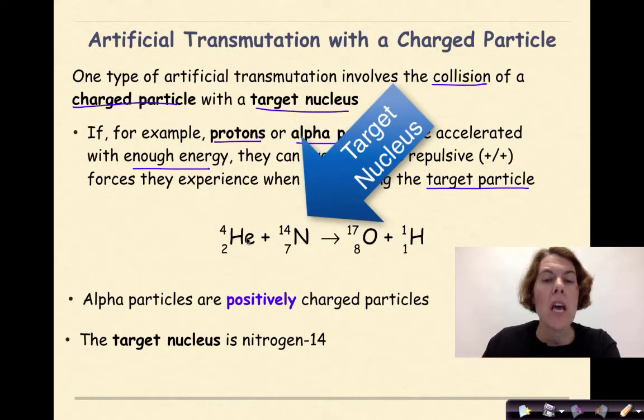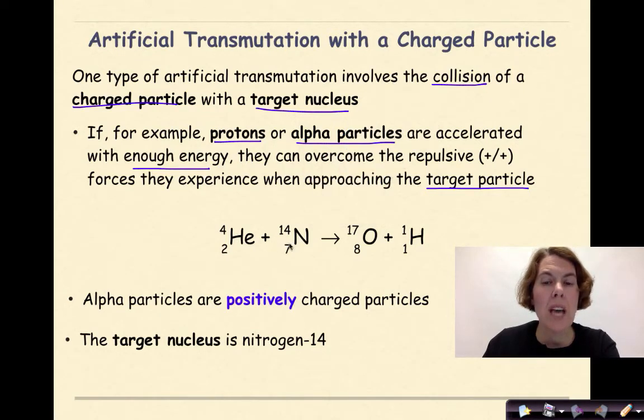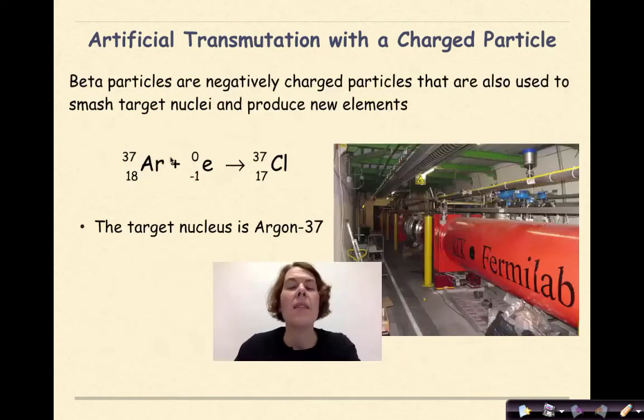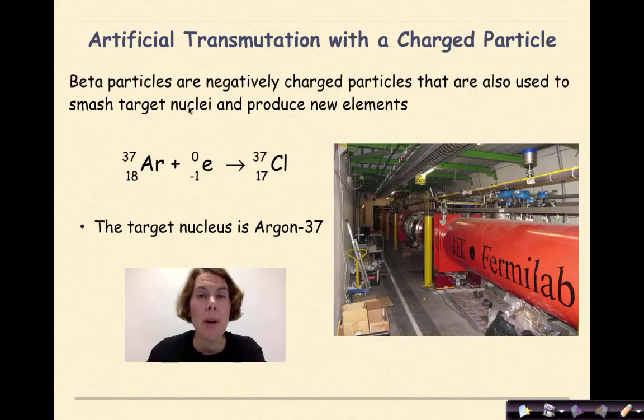So for example, here we have an alpha particle that is my charged particle. Here we have our target nucleus which is nitrogen-14. If these two particles collide together, there is the potential to form oxygen-17 and one proton, which we know is the same thing as a hydrogen nucleus. Alpha particles are positively charged particles. The target nucleus is nitrogen-14.